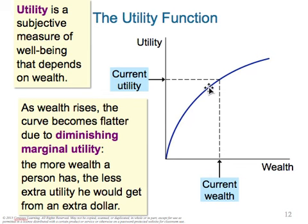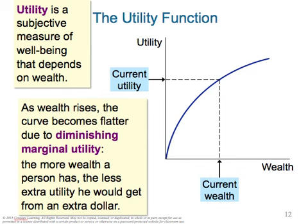As you get more money, your utility increases — you're getting happier. But eventually, you get so much money you start leveling out; another $1,000 doesn't mean much. That's diminishing marginal utility — it's the downward-curved utility function. To illustrate: would a poor person or a rich person be more excited about finding a $20 bill on a sidewalk? Naturally, the poor person would be happier, because $20 means more to someone with little wealth. This is exactly the reasoning behind diminishing marginal utility, and it helps explain why people are risk-averse.